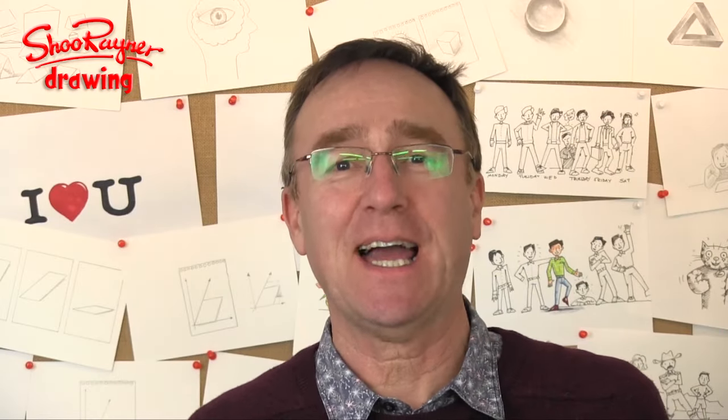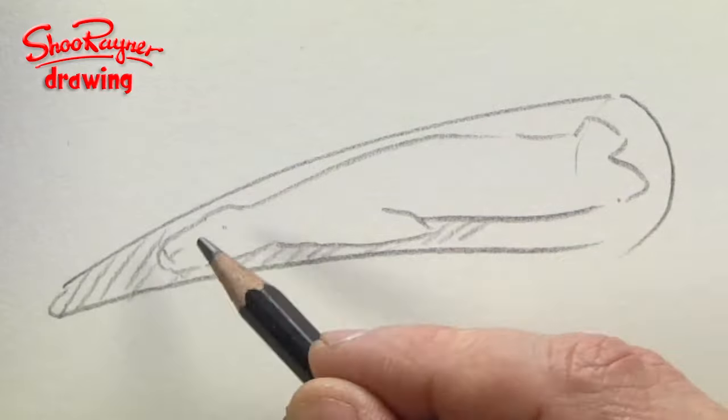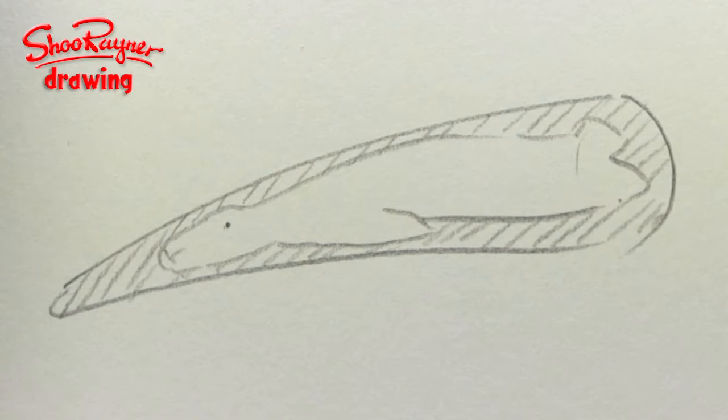The Inuit people of northern Canada and Alaska believe that when they make a carving, the finished object is already inside the walrus tusk or the piece of stone that they're going to carve.